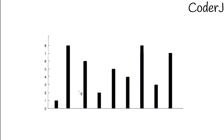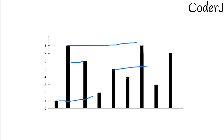The first approach that comes to mind is brute force — form all possible combinations between any two rods, and whichever gives you the maximum answer is your result. You can do that, but it'll be O(n²) and that's not very efficient, so we'll try a different approach: a two-pointer solution.